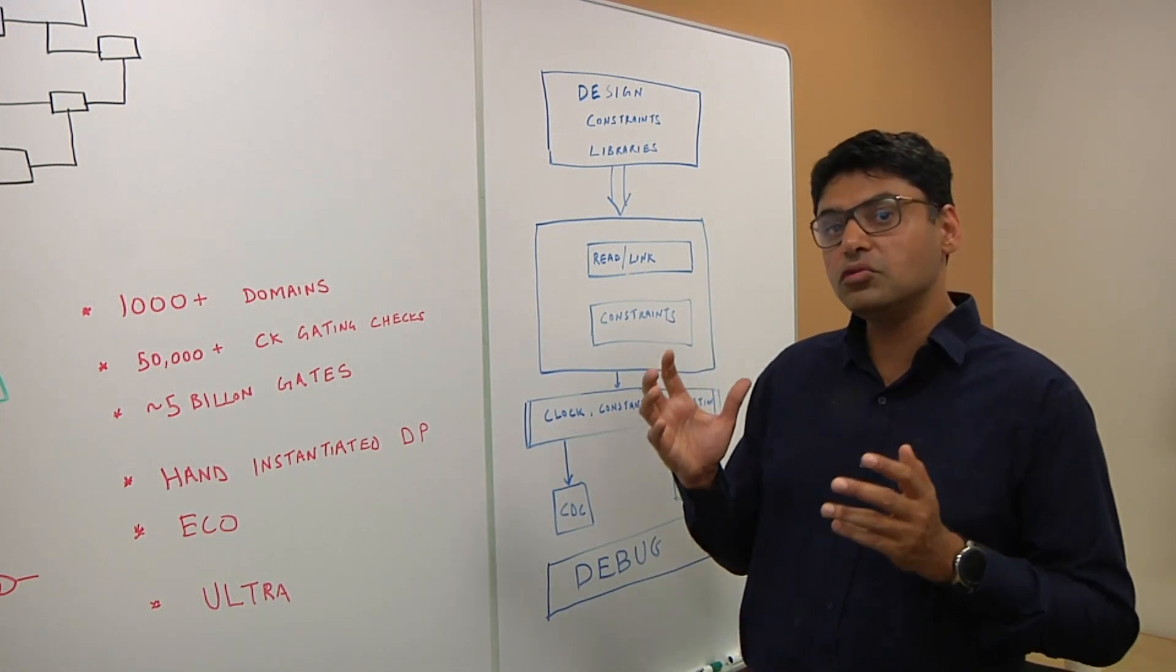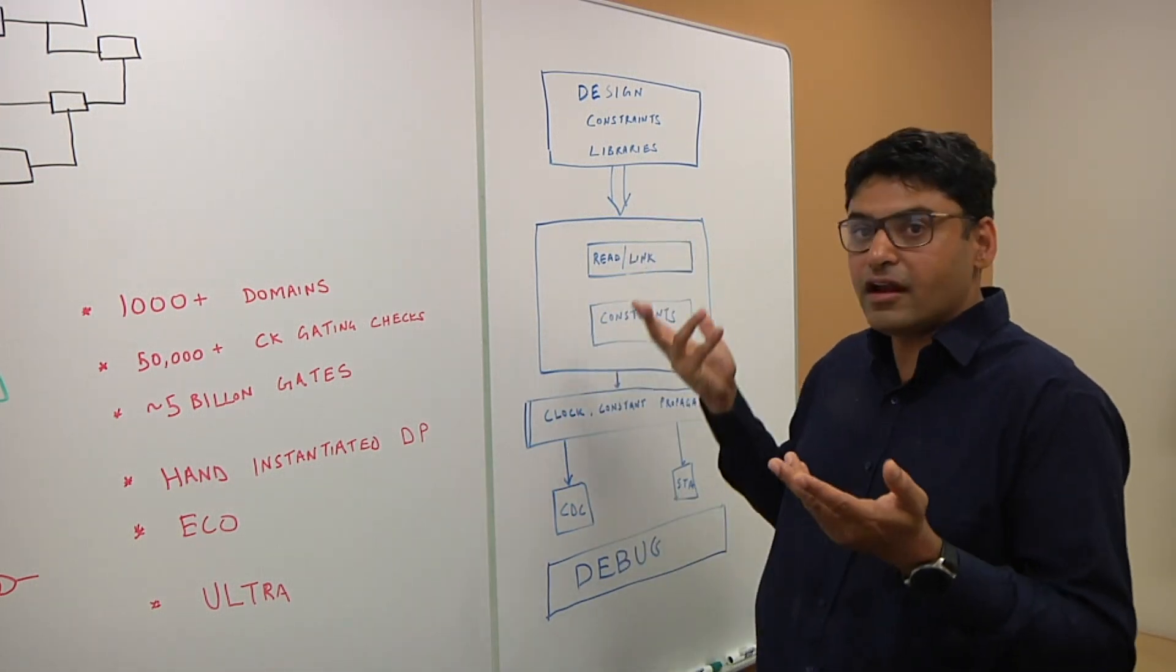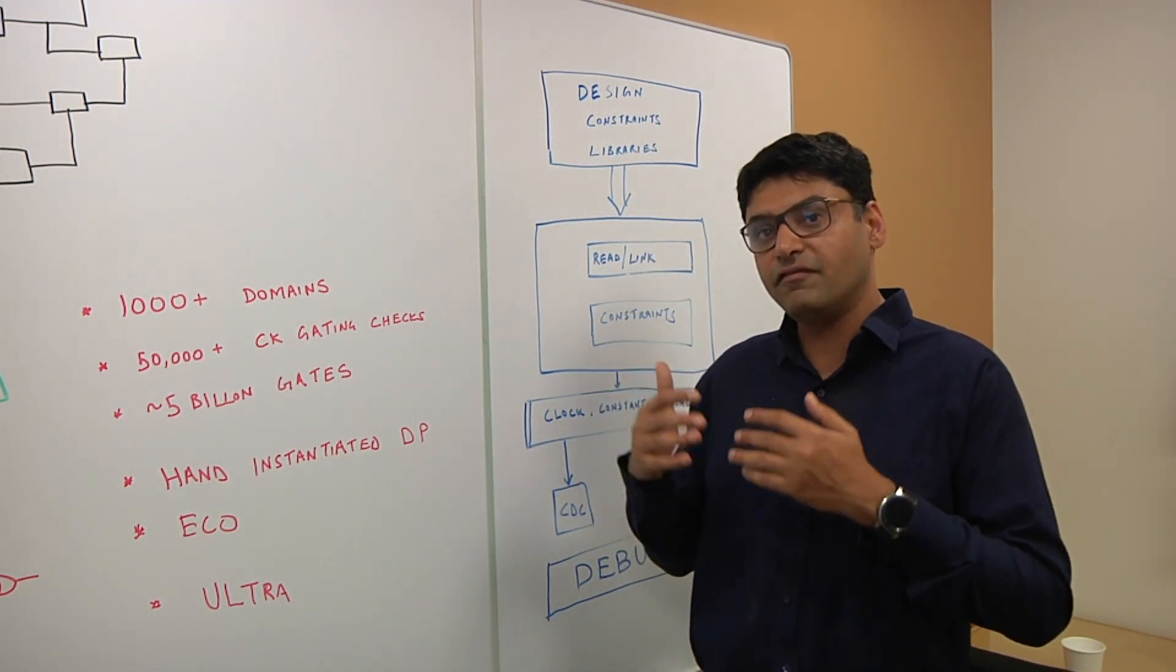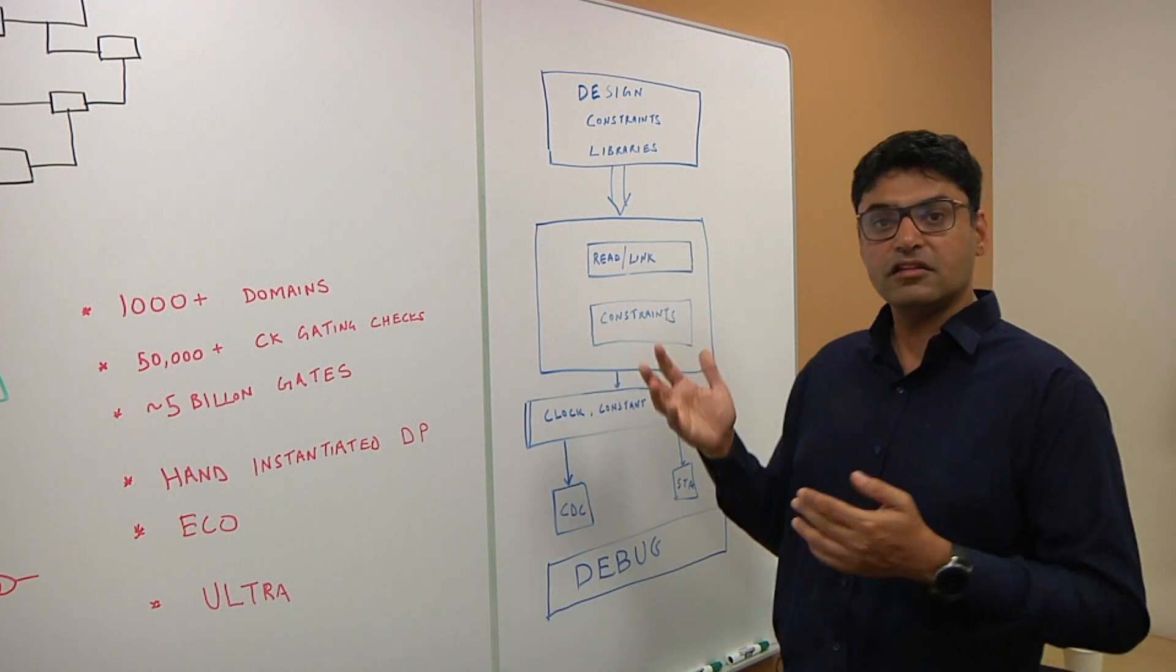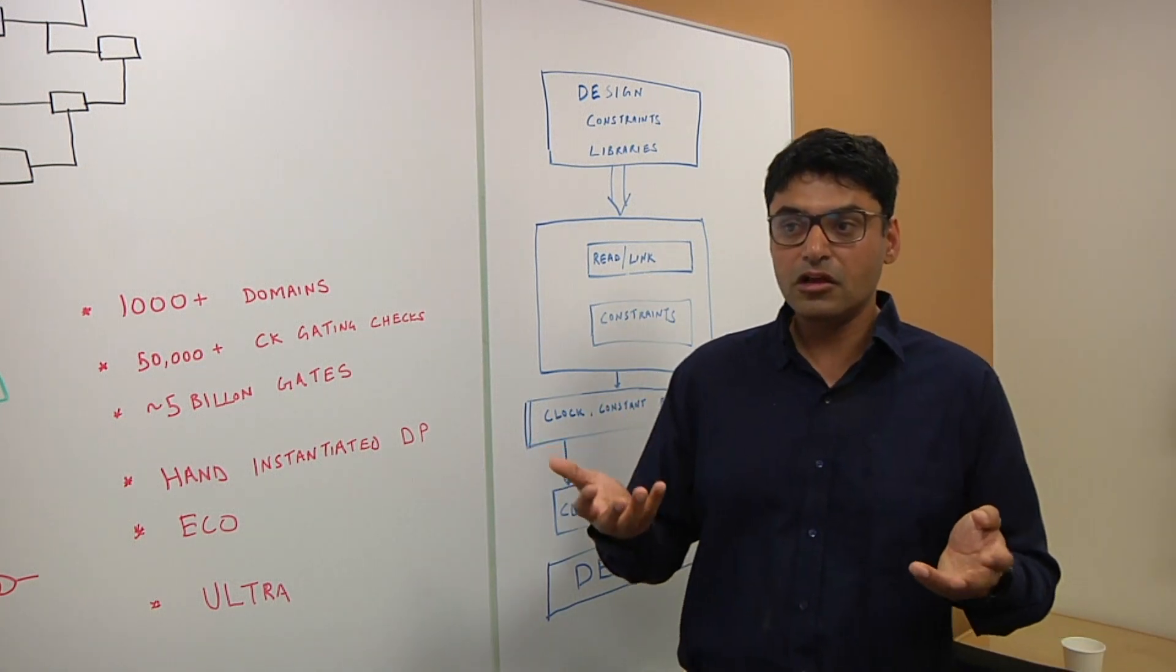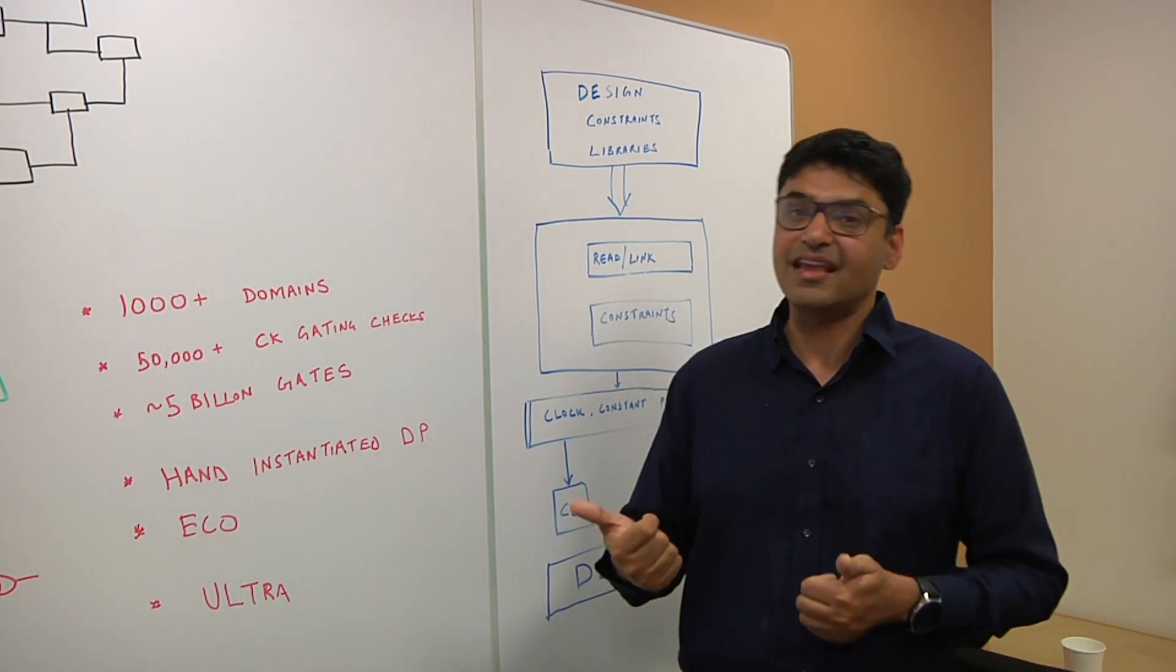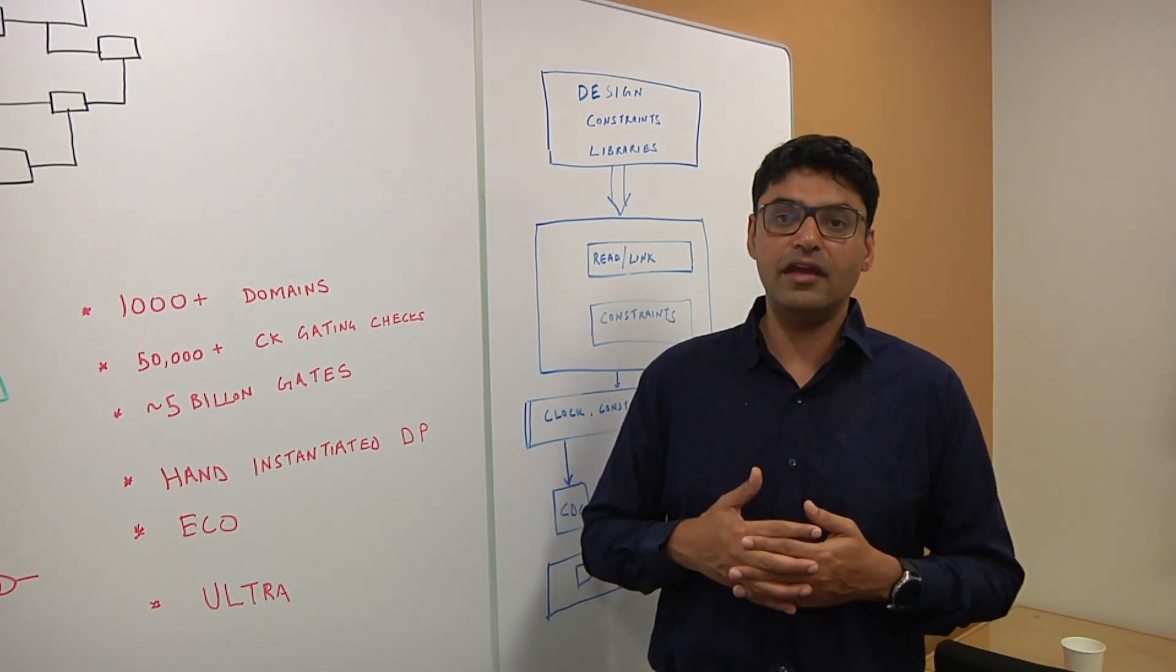Your sign-off CDC tool should understand the way constraints or how the design is read. For example, read-verilog, it should understand the same commands, the same get commands, the same design query commands which your STA flow understands in the same way. Once you have a tool which can read in the same flow, the next step comes to, once it reads in this flow, what does it do with it? How does it actually interpret that? For example, I'll give you a very simple example. Should a path go through a clock gating cell or not? Under what conditions does a path go through a clock gating cell? The interpretation of your CDC tool should be same as the interpretation of your STA tool. There should be no disjoint behavior in which your CDC tool is behaving in a different way.